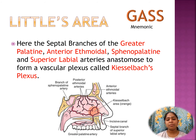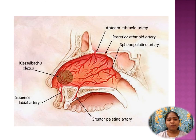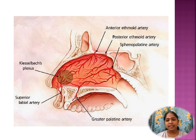These arteries anastomose — that is, they together form a vascular plexus called Kiesselbach's plexus. Here we can see the formation of Kiesselbach's plexus, or Kiesselbach's triangle, by the superior labial artery, the greater palatine artery, the anterior ethmoidal artery, and the posterior ethmoidal artery forming a minor part.